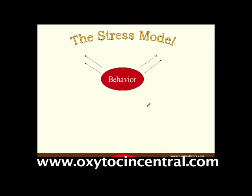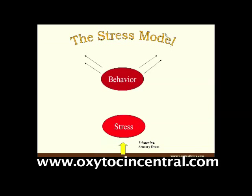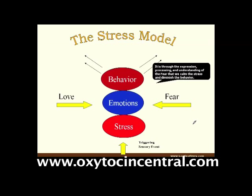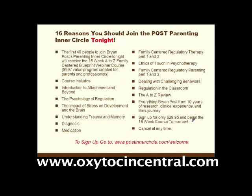The stress model says all behavior arises from a state of stress. In between the behavior and the stress is the presence of a primary emotion — two primary emotions. There's love and there's fear. It's through the expression, the processing, and the understanding of the fear that we calm the stress and diminish the behavior.